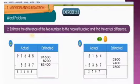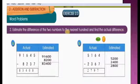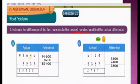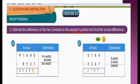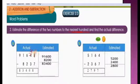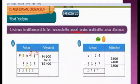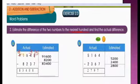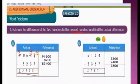Estimate the difference of 2 numbers to the nearest 100 and find the actual difference. The given number is 91,645 minus 8,237. So 5 is smaller than 7, so borrow from 4 — it becomes 3 and this becomes 15. 15 minus 7 is 8; 3 minus 3 is 0; 6 minus 2 is 4. Here 1 is smaller than 8, so take borrow from 9 — it becomes 8 and this becomes 11. 11 minus 8 is 3; 8 as it is. Actual answer: 83,408.